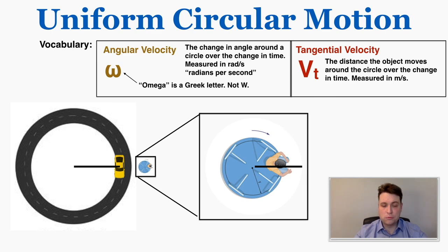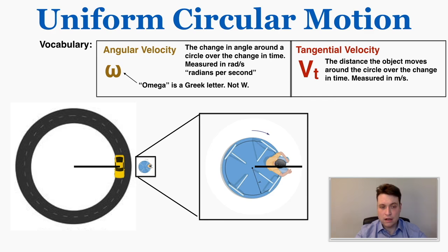Even though the boy's circular path is much smaller than the car's, if you watch how many degrees or radians they go around the circle in a given amount of time, it's actually the same — they're covering the same angle of their respective circles in the same amount of time. That's useful information, so we record it in physics as a separate variable: angular velocity.